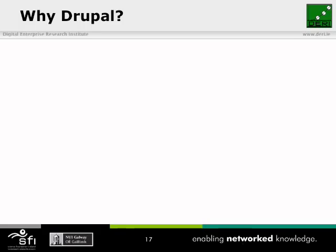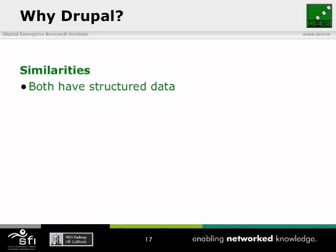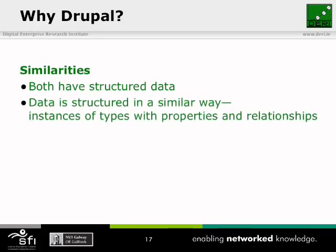We've covered the basic principles of the semantic web. Now I want to talk about why the semantic web and Drupal go so well together. There are some similarities between the semantic web data model and the way that Drupal handles information. Both have structured data — when you create a content type and add a name field and an address field, those bits of information are structured data. You're telling the user what kind of information to put in those fields. Between the semantic web and Drupal, the data is structured in a similar way: instances of types with properties and relationships.